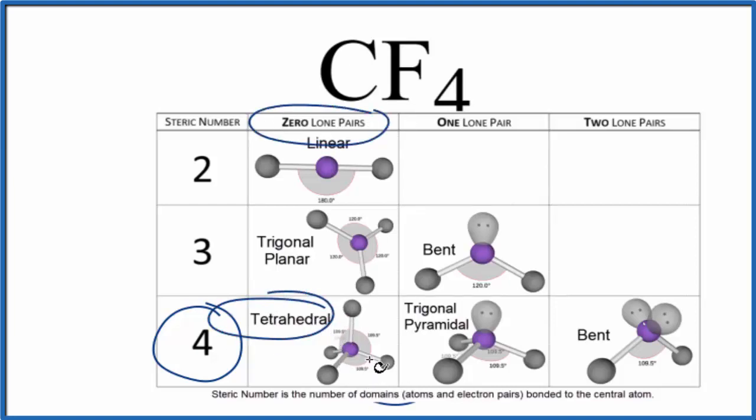There's also something called the AXE notation, so we'll write AXE. A is the central atom, the carbon. X is the fluorine. We have four of those, and we have zero lone pairs. So with the AXE notation we'd have AX4. Essentially, you look that up, you'd see that it's a tetrahedral molecular geometry, bond angle 109.5.